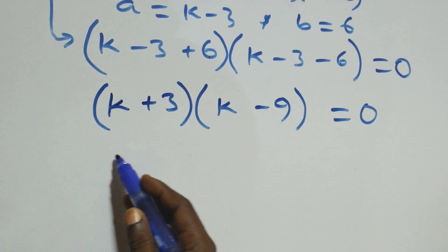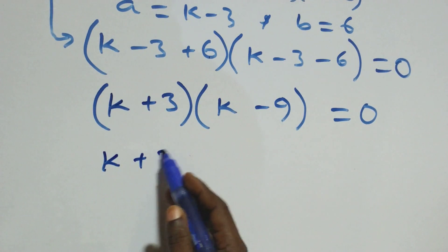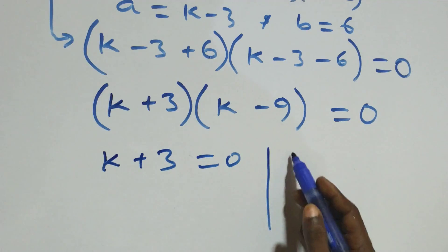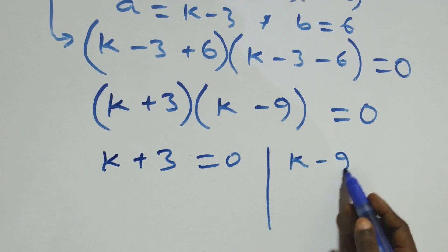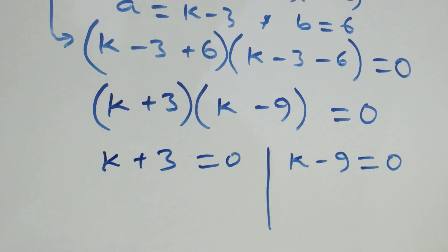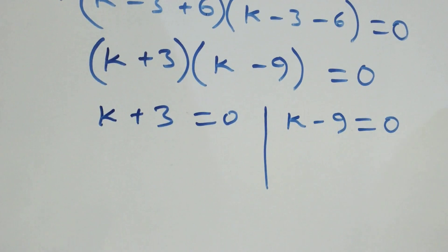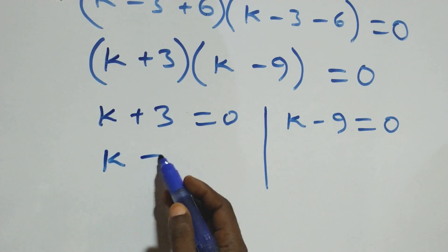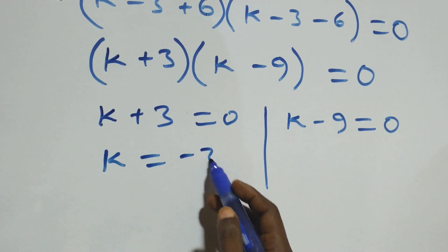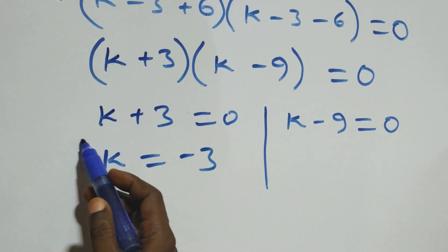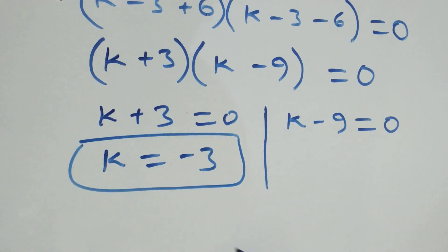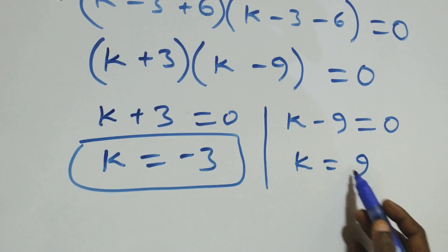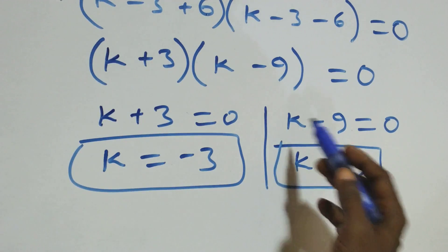From the two factors, we get two possible cases: k plus 3 equals 0, giving k equals minus 3, which is a real solution; or k minus 9 equals 0, giving k equals 9, which is also a real solution.